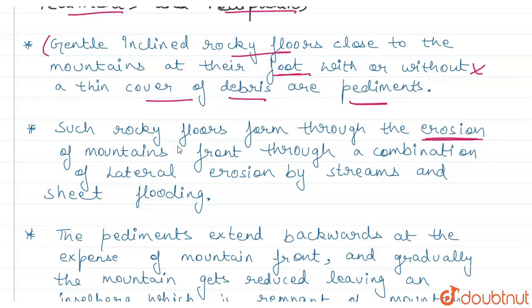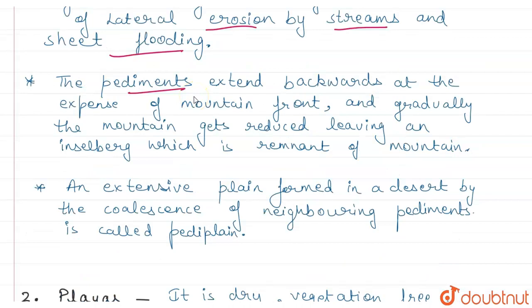When erosion happens in mountains, there is lateral erosion by streams and sheet flooding. Pediments extend backwards at the expense of mountain front, gradually leaving mountain remnants which are called insulberg. Insulberg is the word Davis used in his cycle of erosion.